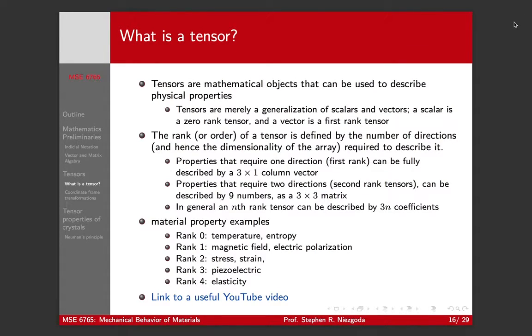Okay, so finally we're at the meat of today's lecture. So what is a tensor? You've probably heard the notion of tensor properties of crystals. One way to interpret tensors is to think of them as a generalization of scalars and vectors. A scalar is a number that doesn't depend on direction. A vector has both a magnitude and a direction.